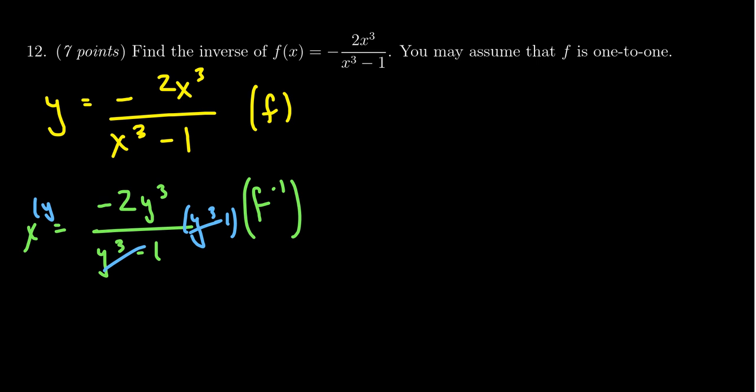But what's good for the goose is good for the gander. We times the left-hand side by y cubed minus 1 as well. This gives us x times y cubed minus 1. The right-hand side will just be negative 2y cubed.